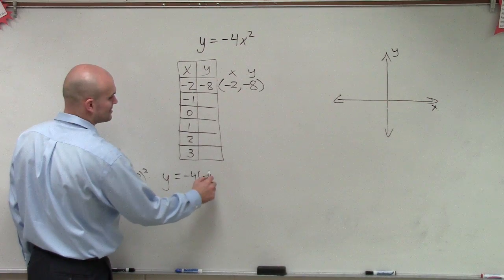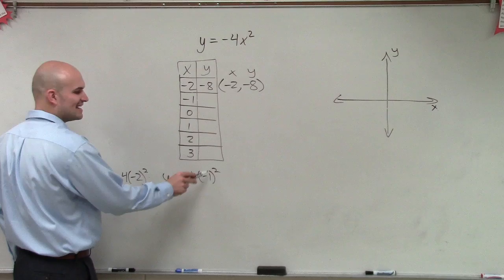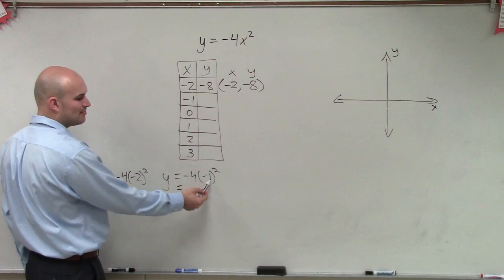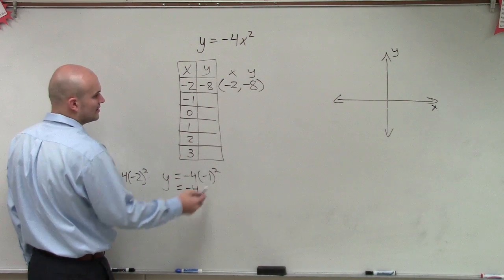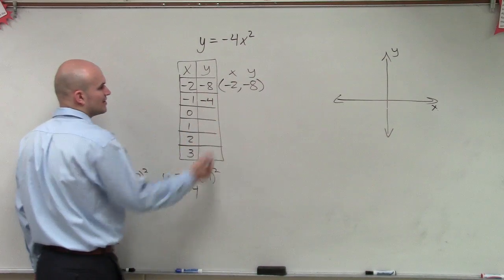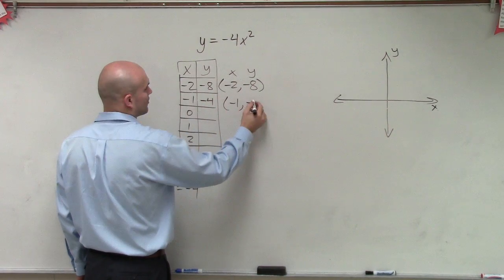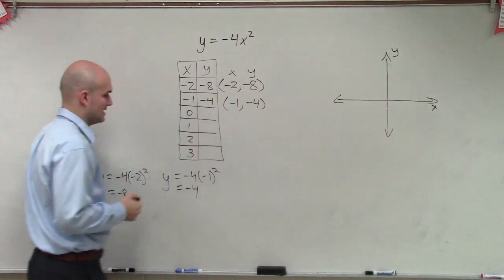y equals negative 4 times negative 1 squared. So in this case, negative 1 squared is a positive 1. Positive 1 times negative 4 is negative 4. So therefore, this can be rewritten as negative 1 comma negative 4.